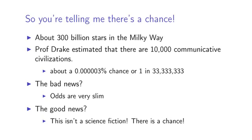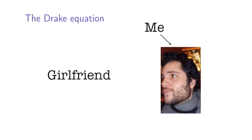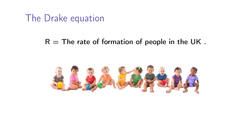Dr. Drake was interested in finding one of these in one of these. But I was more interested in finding something much more important. Finding one of these in one of these. I wanted to work out how many potential girlfriends are there out there for me. So I re-parameterized Dr. Drake's equation. Rather than G being a number of communicative civilizations, G being a number of potential girlfriends. So I take R being the rate of formation of human beings in the UK. We set that at about 150,000 per year.